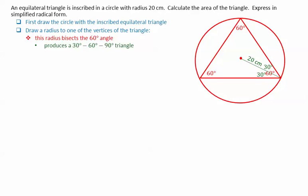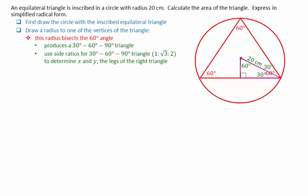This produces a 30-60-90 triangle. We can then use the side ratios for a 30-60-90 triangle of 1 to √3 to 2 to determine x and y, which are the legs of the right triangle.